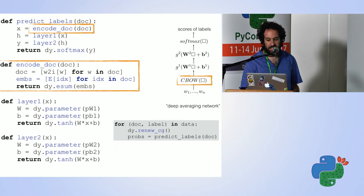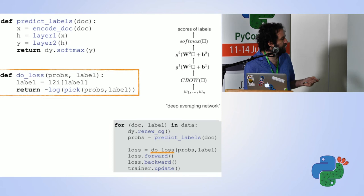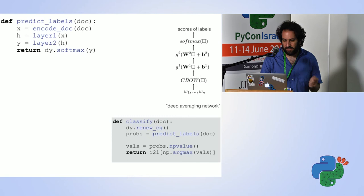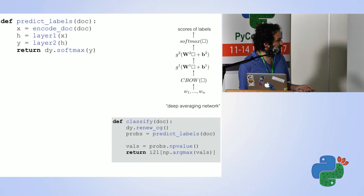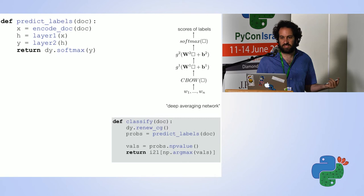For the loss: we translate the label into a number, pick that index from probs, take the log, negate it — using dy.log and dy.pick. For classification rather than training, we just take probs, get the npvalue (now a numpy vector), call argmax, and translate the number back to a label. I think this is very idiomatic Python code that's easy to understand even if you haven't done this before.